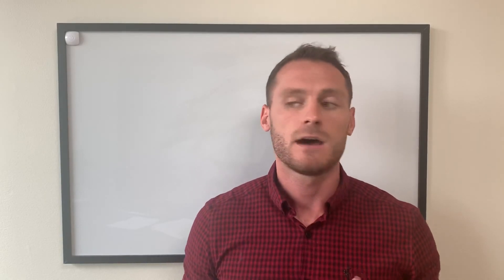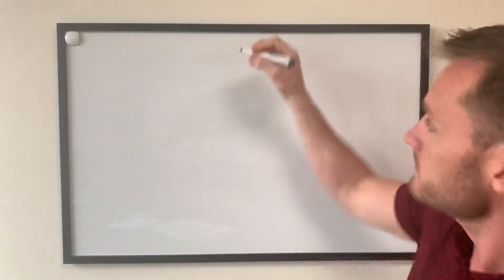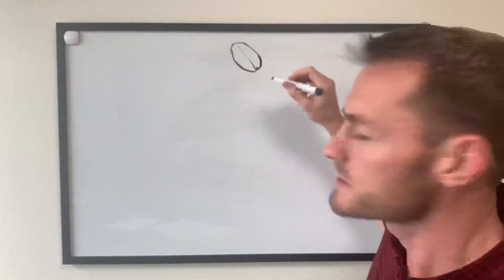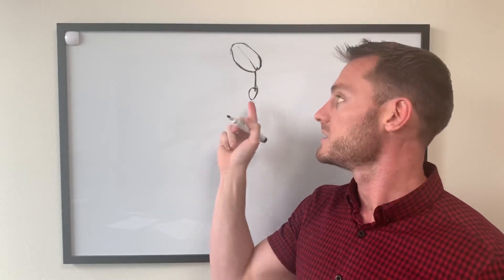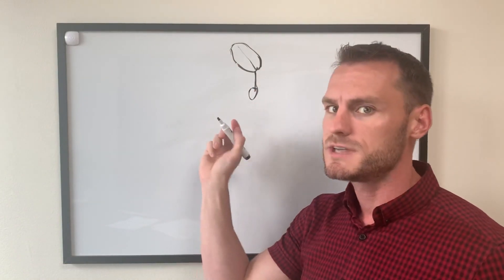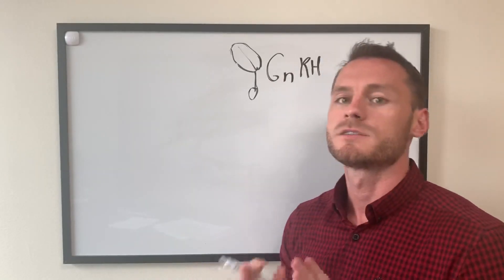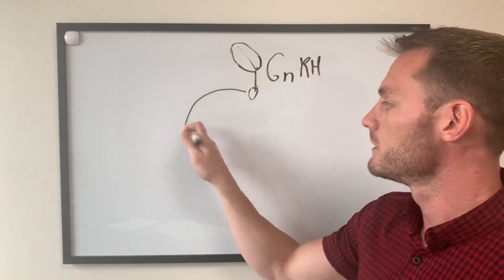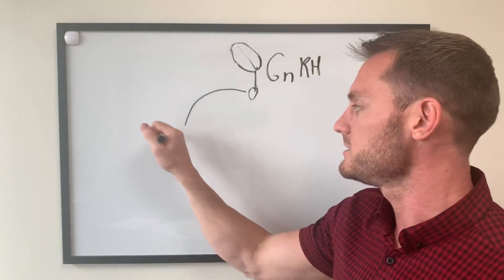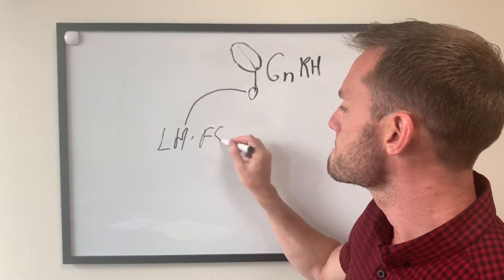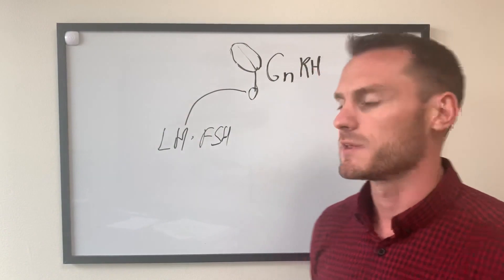Now the first thing that we want to take into consideration is the hypothalamic-pituitary-gonadal axis. And basically that's how our brain talks to our gonads. So here's our brain. Hypothalamus, and we also have something called the pituitary gland. The brain talks to the pituitary gland with a hormone called gonadotropin-releasing hormone. That tells the pituitary to release LH, luteinizing hormone, and FSH, follicular stimulating hormone.